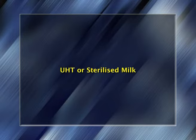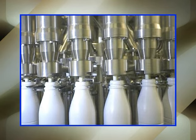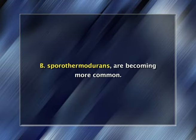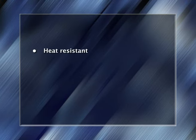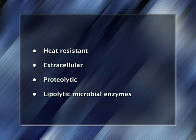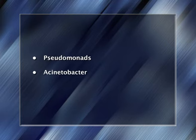UHT or sterilized milk: spoilage is usually caused by post-process contamination, and spoilage caused by survival of heat-resistant Bacillus spores is rare unless very large numbers are present initially, although reports of sterility failure caused by Bacillus sporothermodurans are becoming more common. A particular problem with UHT milk is spoilage by heat-resistant extracellular proteolytic and lipolytic microbial enzymes produced by psychrotrophic organisms — particularly Pseudomonads, Acinetobacter, and Achromobacter — which survive the thermal process even after all viable cells have been destroyed.